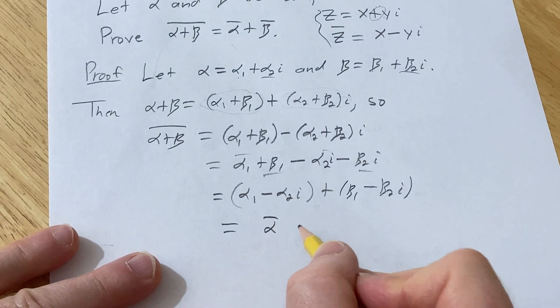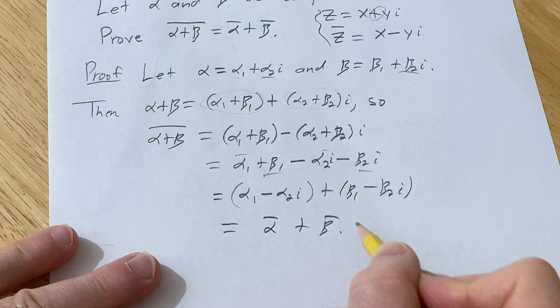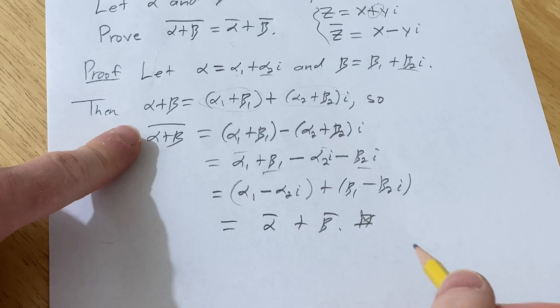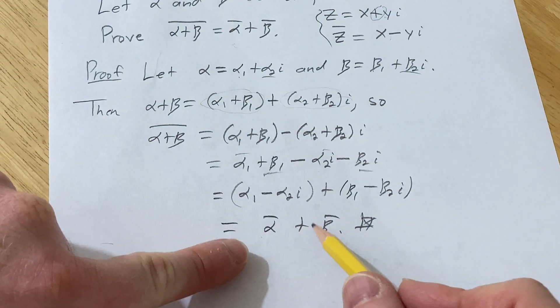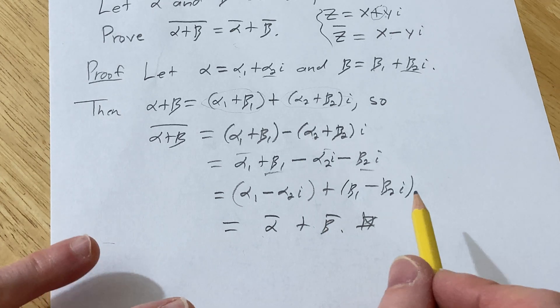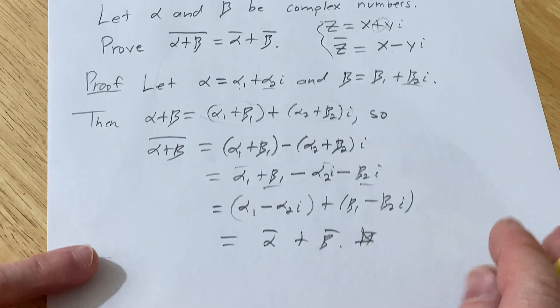But this is the conjugate of alpha, and this is the conjugate of beta, and so that completes the proof, because the conjugate of alpha plus beta is equal to the conjugate of alpha plus the conjugate of beta, which is what we wanted to prove in this simple problem.